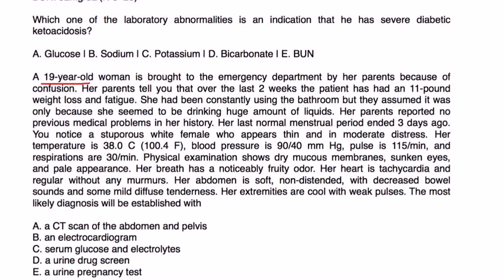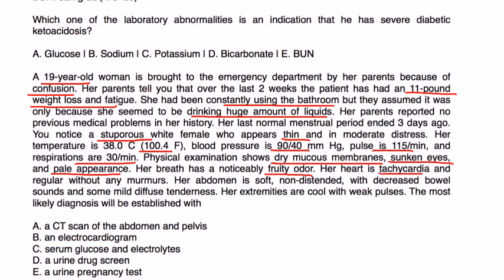Next question. A 19-year-old woman is brought to the emergency department by her parents because of confusion. Parents tell you that over the last two weeks, the patient has had an 11-pound weight loss and fatigue. She has been constantly using the bathroom, but they assumed it was only because she seems to be drinking huge amounts of liquids. Parents reported no previous medical problems. You notice a stuporous white female which appears thin in moderate distress. Blood pressure is 90 over 40, temp is 100, pulse is 115, respirations are 30. Physical exam shows dry mucous membranes, sunken eyes, pale appearance. Breath has noticeably fruity odor. Heart is tachycardic and regular without any murmurs. Abdomen soft, non-distended, with decreased bowel sounds, with some mild diffuse tenderness. Extremities are cool with weak pulses. Most likely diagnosis will be established with.